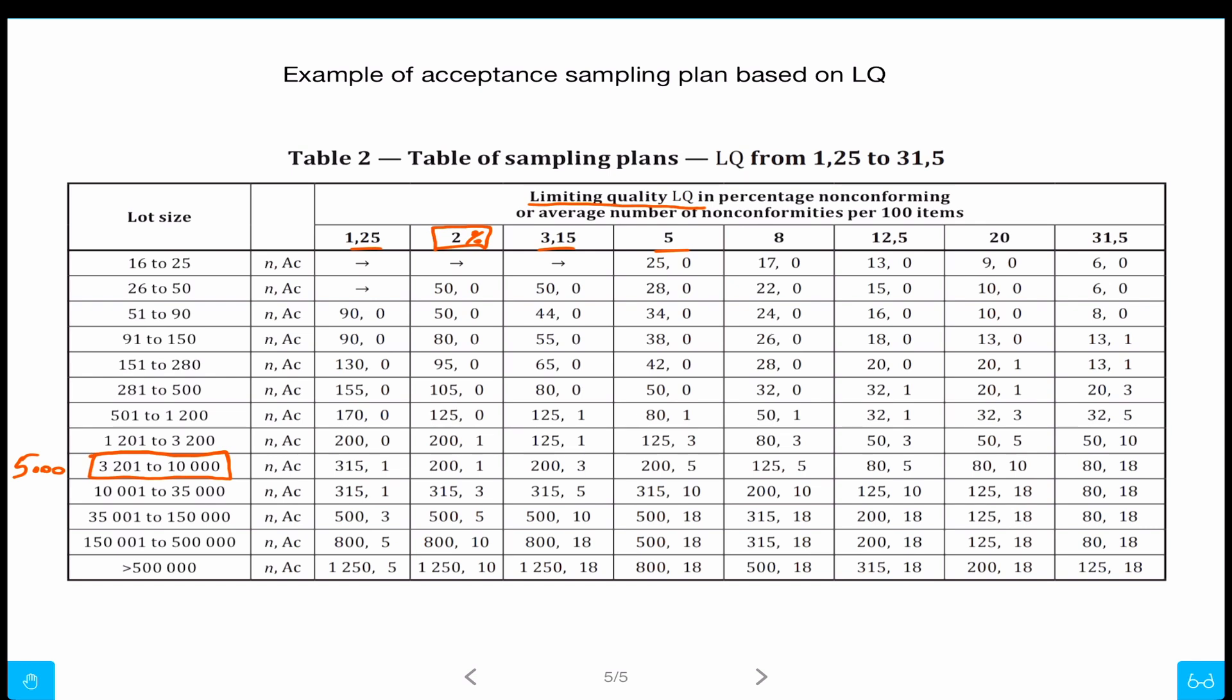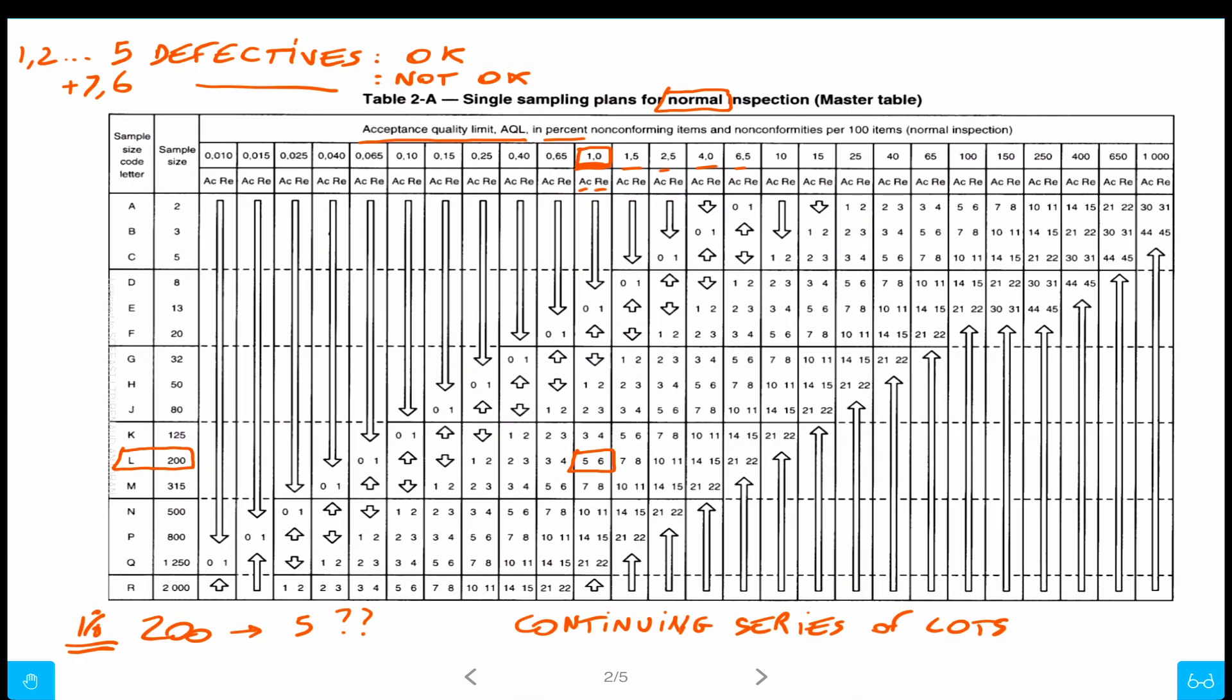So it's this row, and then we have here 200 and 1. So 200 means 200 pieces, and then it's okay if I find zero or one defective. So here, the acceptance limit is one. And if we go back again here, you can see it used to be five. Five, that's a lot more.